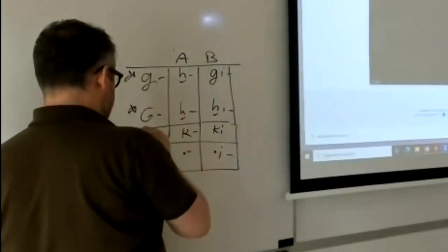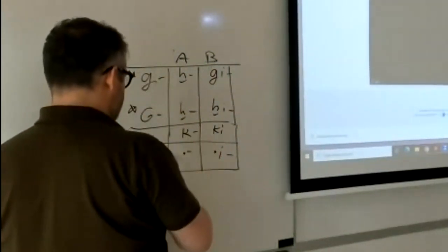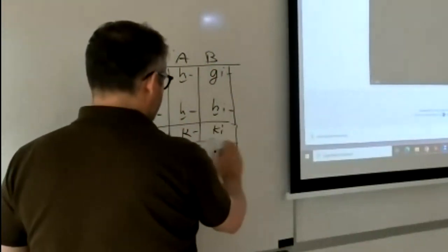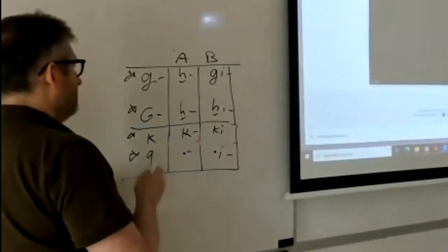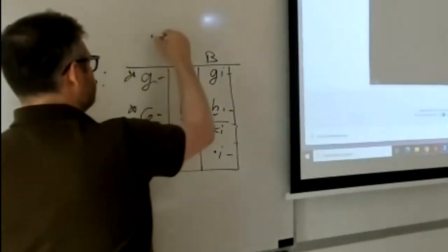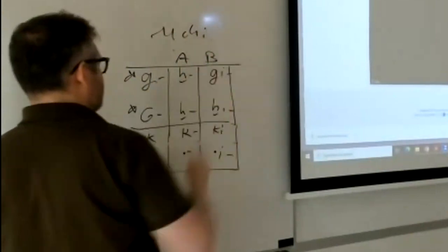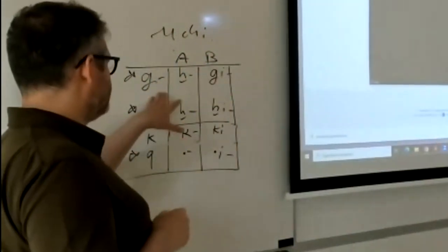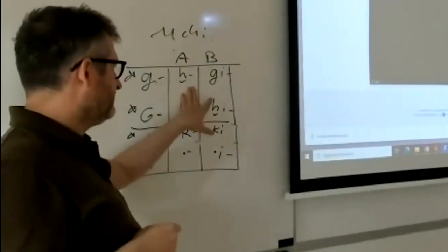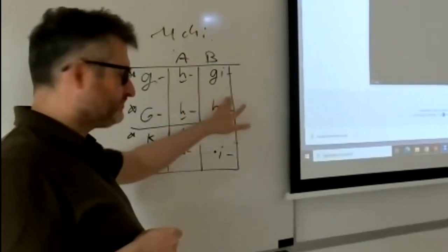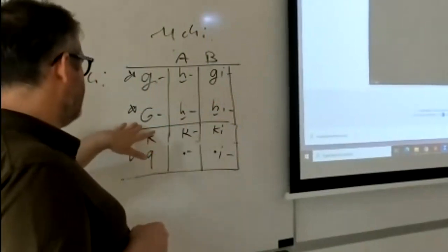So velar, uvular. This is all Middle Chinese, right? So what do we get? In Type A syllables, g changes into a voiced velar fricative, and in Type B syllables it's a g. And then the uvular is a voiced velar fricative in Type A syllables.